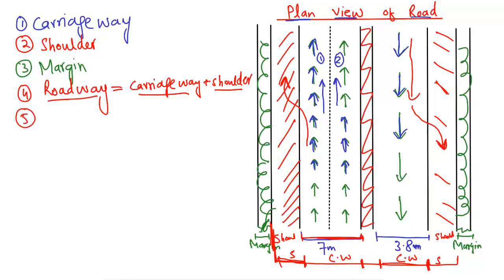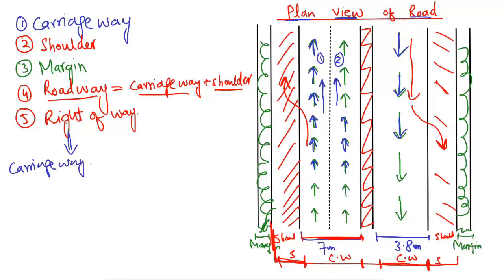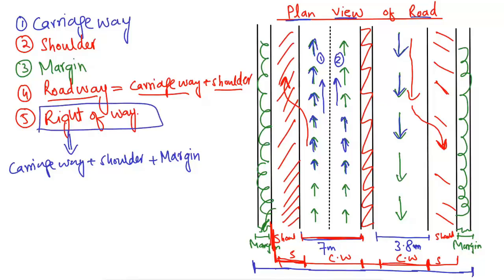The fifth component is the right of way. The right of way is the combination of carriageway, shoulder, and margin. It is the longest total width of the road, extending from margin to shoulder to carriageway and back. The main difference between roadway and right of way is that roadway consists of only carriageway and shoulder, while right of way also includes the margin.